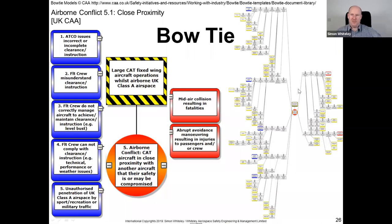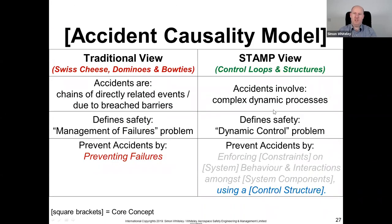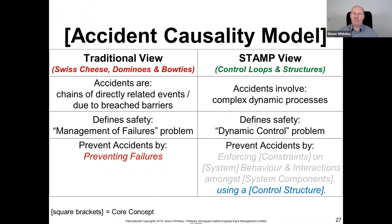The traditional view of Swiss cheese, dominoes, and bowties is that accidents are due to chains of directly related events or breach of barriers, and defines safety as a management of failures problem — to prevent accidents, you prevent failures. But as those earlier challenges showed, we're having accidents that are not due to failures or breached barriers. So how do we deal with that? This is where the STAMP-based approach comes in.